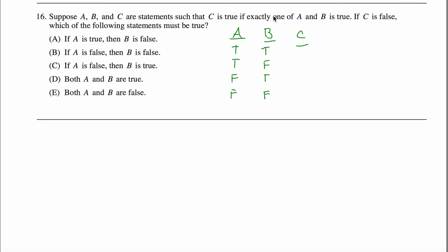C is true if exactly one of A and B are true. Up here, C is false. Down here, C is true. Down here, C is true. Down here, C is false. Here I have zero trues, one true so it's true, one true so it's true, two trues — it's false.